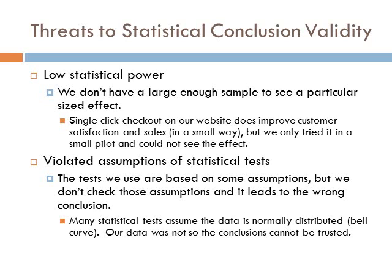The second threat is violating the assumptions of statistical tests. Every test we do — a correlation coefficient, a t-test — has basic assumptions. One is that the data, if plotted, looks like a bell curve, called normally distributed. If we don't have normally distributed data, which is not uncommon, we've violated the assumptions of that test. When we violate that, the conclusions we can draw about significance become less certain — we've added error into our conclusions.